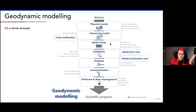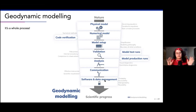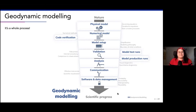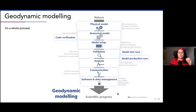In order to get more insight into an observation, in geodynamic modeling you look at what physics best describes it. Because those physics are typically too complicated to do by hand, you make a computer model - a numerical model that the computer can solve. Then when you have your code, you have your specific model set up for your research question, check that everything works, analyze it, communicate it, and manage all the data you've produced. Ideally, in the end, you have some kind of scientific advancement - you have created knowledge.